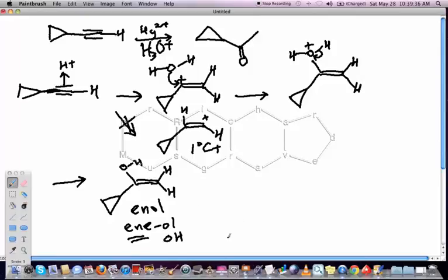Now what we know about enols is that they are in equilibrium with their corresponding keto form. And that the equilibrium lies very much on the side of the ketone as opposed to the enol.